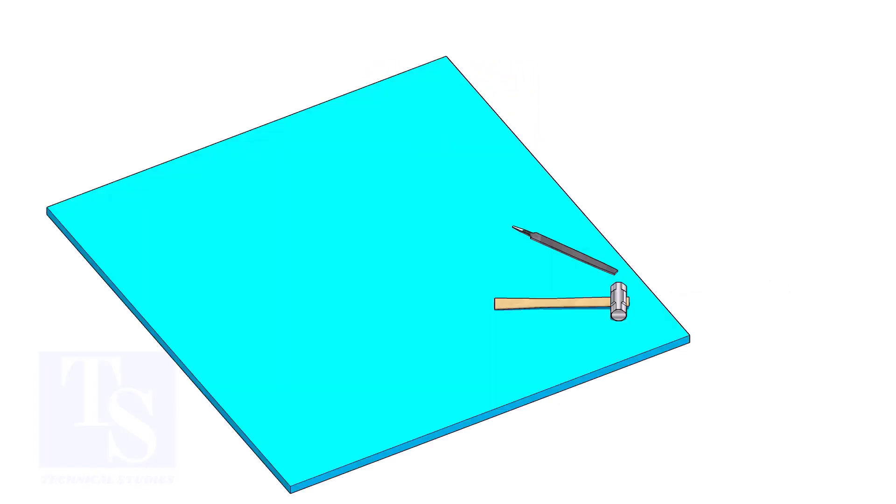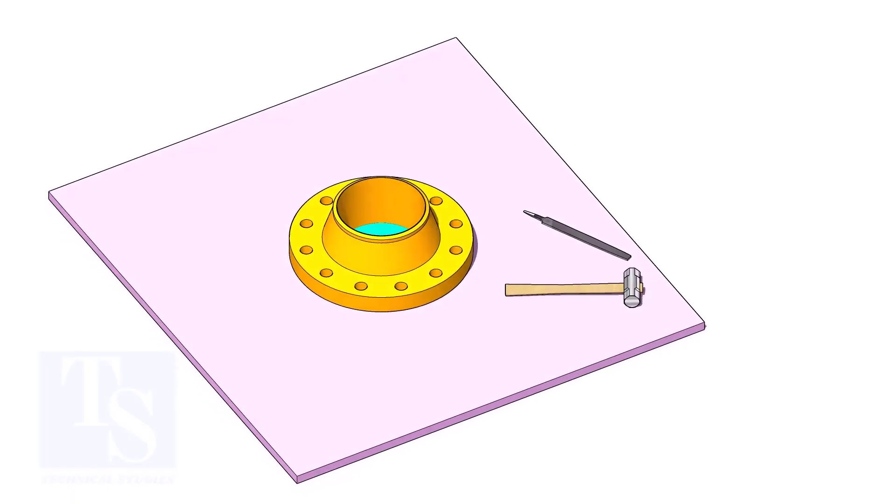The flange face may get damaged during fabrication. Use a non-metallic sheet like a Teflon sheet, thin hardboard, or piece of CNAF gasket sheet, as shown in the video. Use small wedges to level the flange.